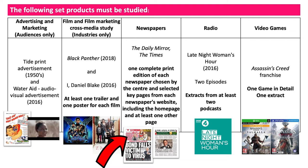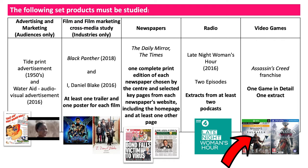For Late Night Woman's Hour you need to look at two episodes and at least one extract from those two podcasts. For video games you will study the Assassin's Creed franchise, and at the very least you should have studied at least one game in detail and at least one extract. To find more information about all these examples, if you go on the Mrs. Fisher channel she has some very detailed videos going through each one with some really good examples.